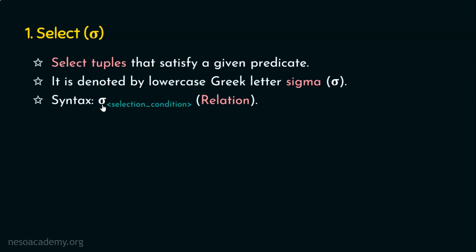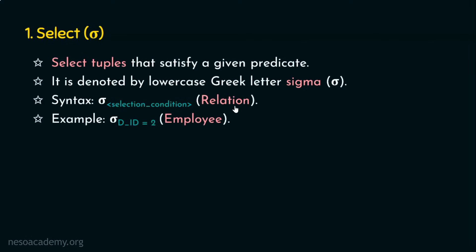Let's see the syntax of this select operation. The syntax uses the select operator, which is the lowercase Greek letter sigma. There is a subscript, and in the subscript of sigma, we are required to provide the predicate or the condition — referred to as the selection condition. The select operator is going to select all tuples that satisfy this condition from the given relation.